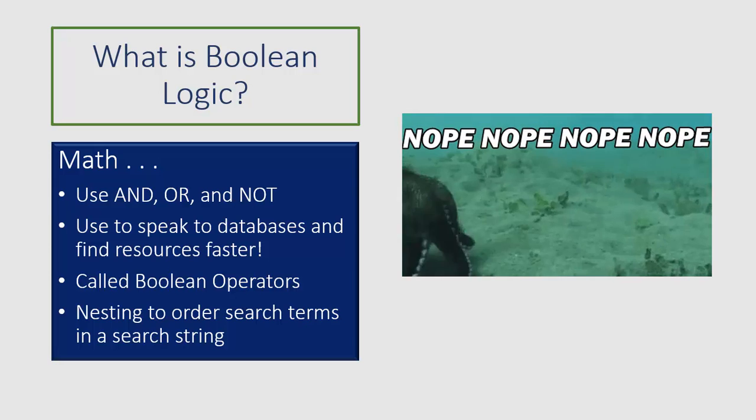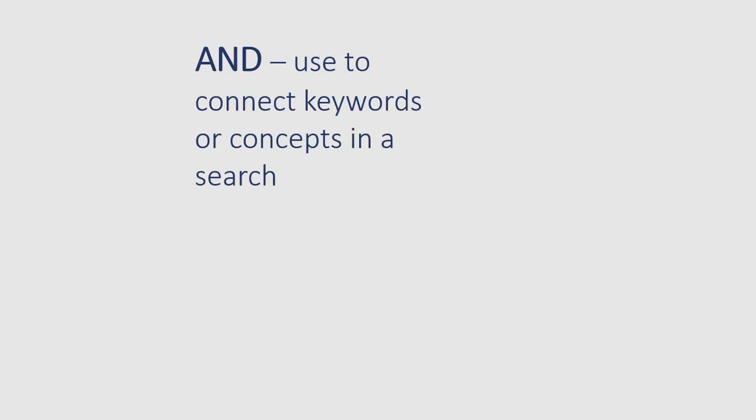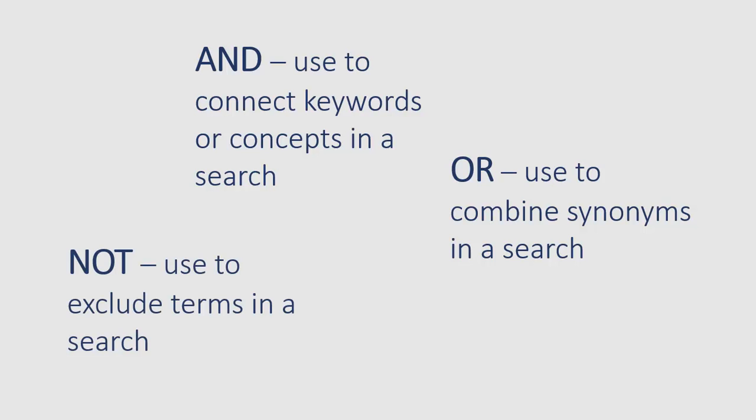Let's take a look at each of the Boolean operators and see how they help us build better, faster, stronger searches. AND: when you want to connect keywords or concepts in a search, use the AND operator. OR: use OR when you want to combine synonyms or like terms in your search. NOT: if you need to exclude terms from your search, use NOT.